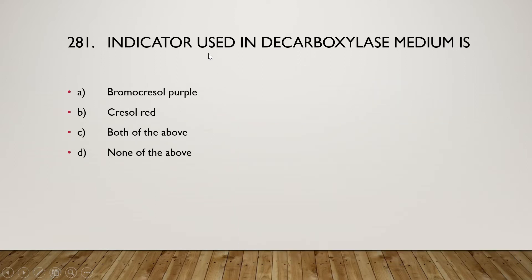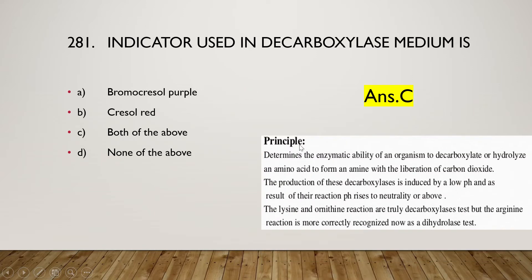The next question is: the indicator used in decarboxylase medium is (A) bromocresol purple, (B) cresol red, (C) both of the above, or (D) none of the above. The right answer is option C — both. Bromocresol purple and cresol red are both used as indicators in decarboxylase medium. This test determines the enzymatic activity of an organism to decarboxylate or hydrolyze an amino acid to form an amine with liberation of carbon dioxide.